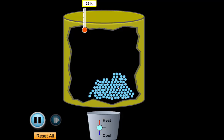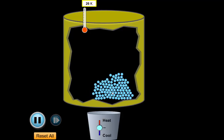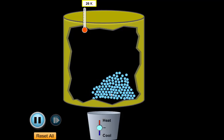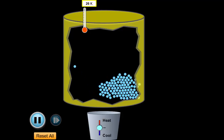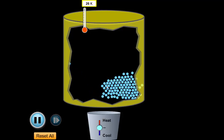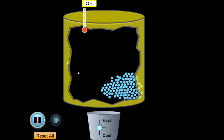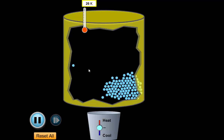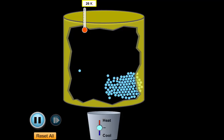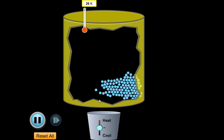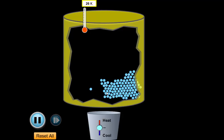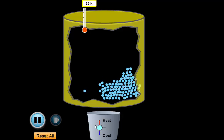I did not change how strong the forces of attraction are between them. All I did was add a little bit of energy, and so now these particles have enough energy to overcome the forces of attraction. You can see a couple of particles have enough energy to actually bounce all the way away from the substance, although when they come back, they do stick.